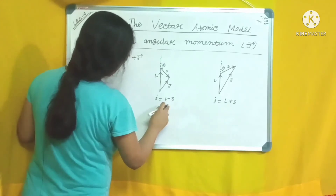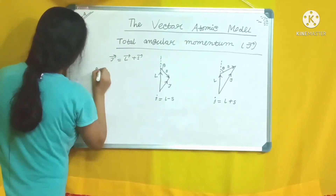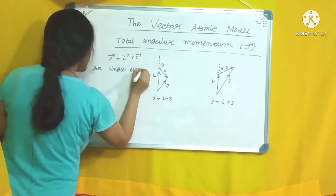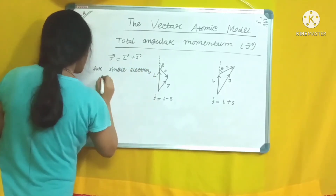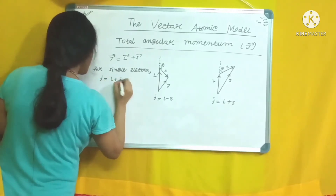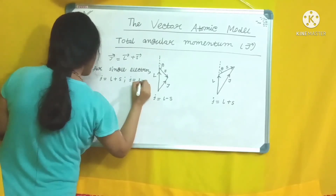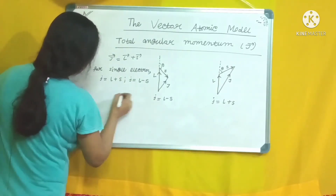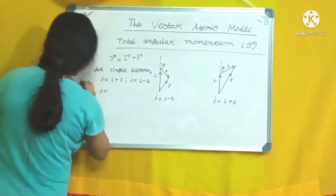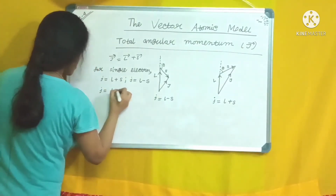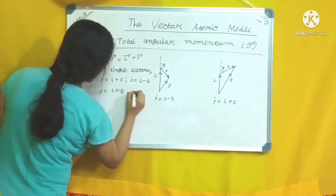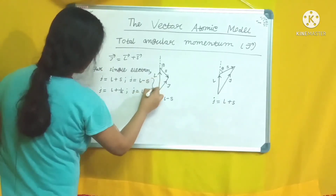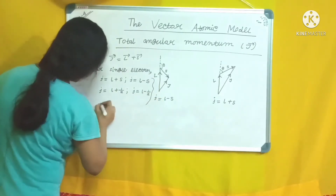When L and S are anti-parallel, J = L − S. For a single electron, J can take two values: J = L + S and J = L − S. Therefore, for a single electron, J can have two values: l + ½ and l − ½.